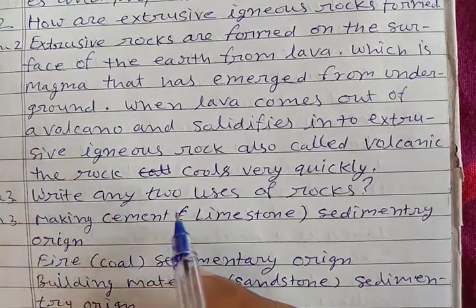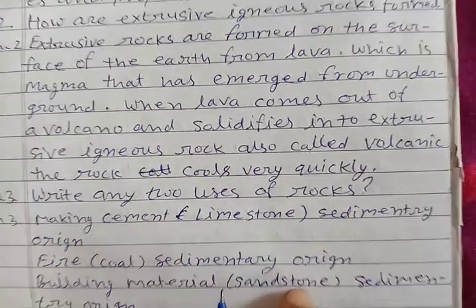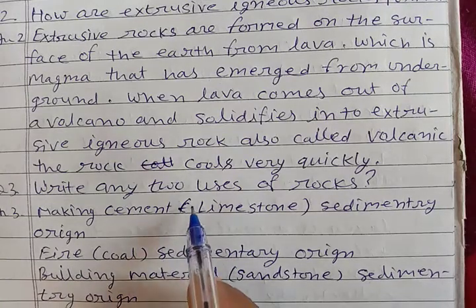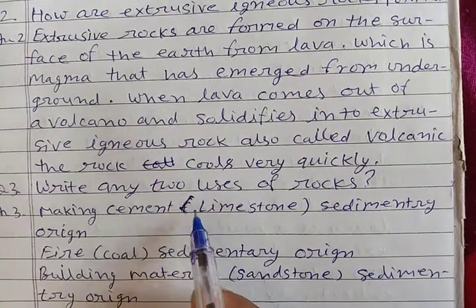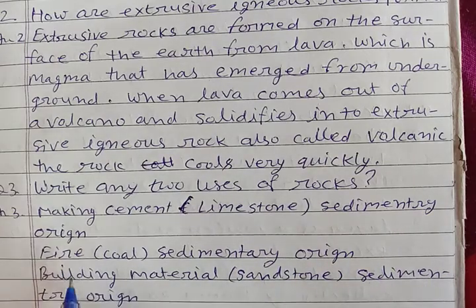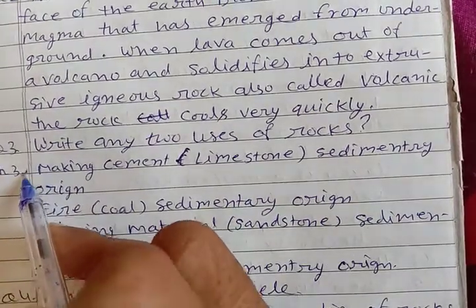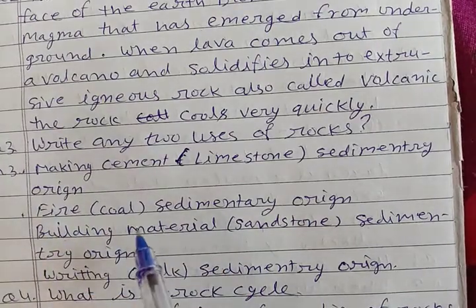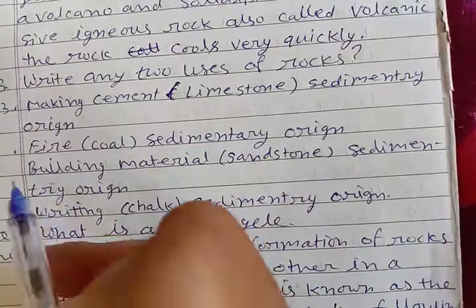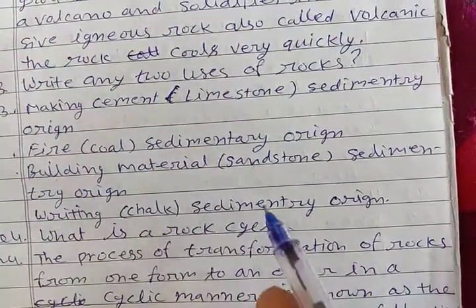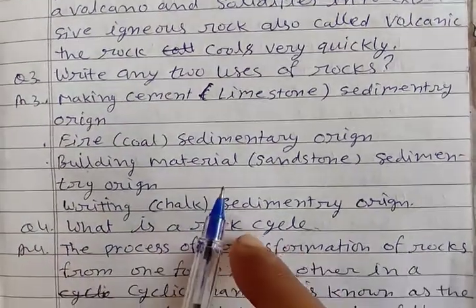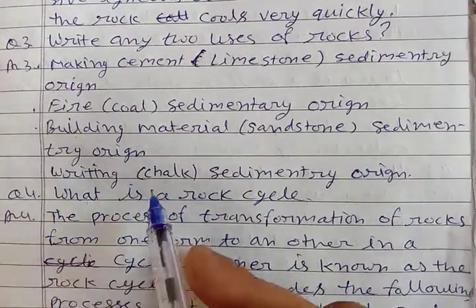Question third: write any two uses of rocks. First, making cement — limestone is a sedimentary rock used for this. Second, coal is a sedimentary rock used as fuel. Third, building material — sandstone is a sedimentary rock used for the foundation and structure of buildings.